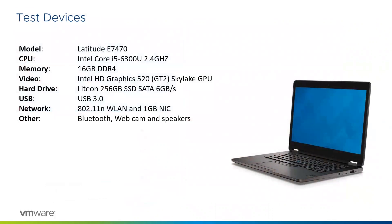In terms of the test devices, we used a Dell Latitude E7470. The spec was an i5 CPU running at 2.4 GHz, 16 GB of RAM, using an Intel graphics GPU. Even though it had wireless, we were using the Ethernet cable to guarantee the bandwidth, and as mentioned we had them all connected directly to power — not running off battery — just in case anything was throttled during performance testing.